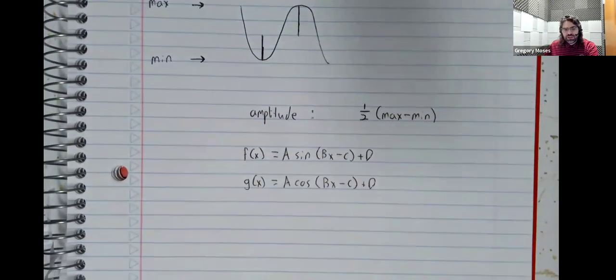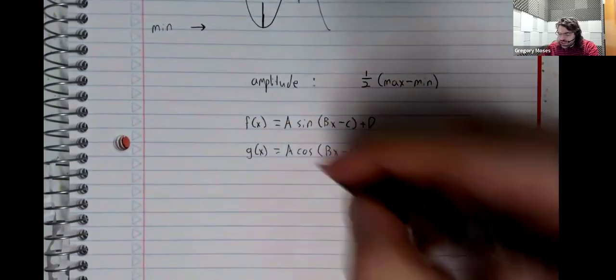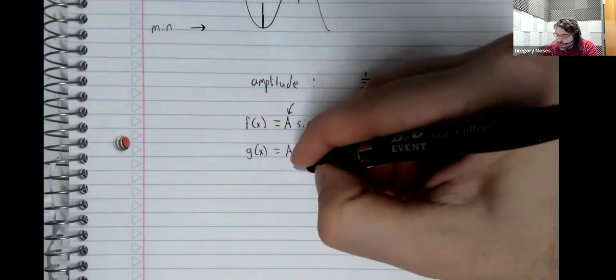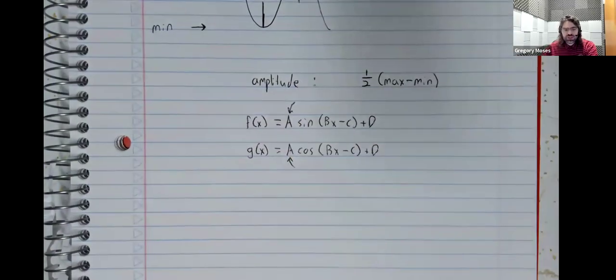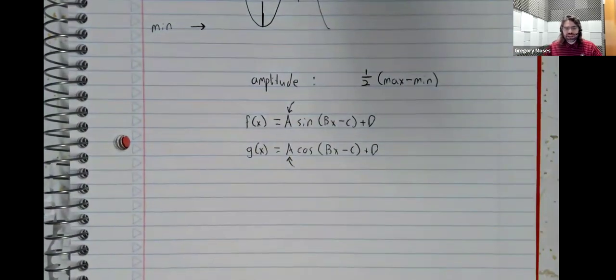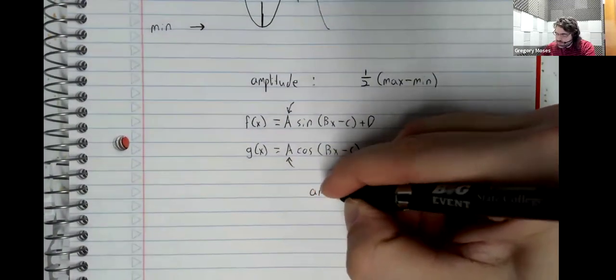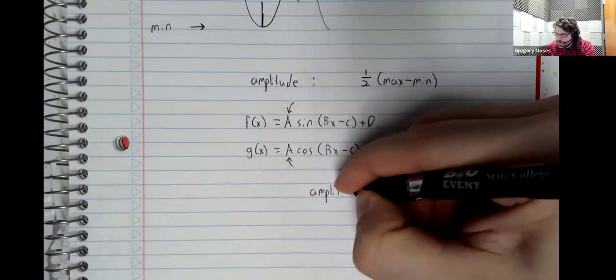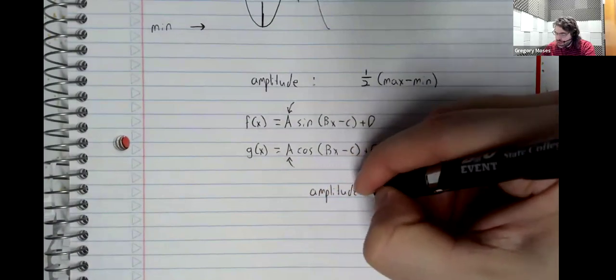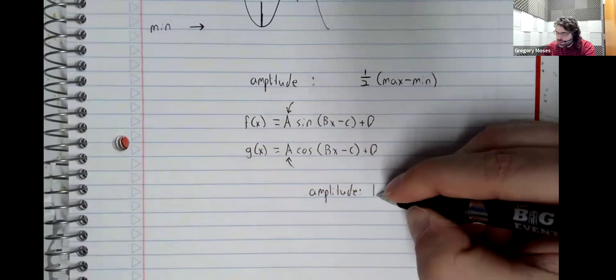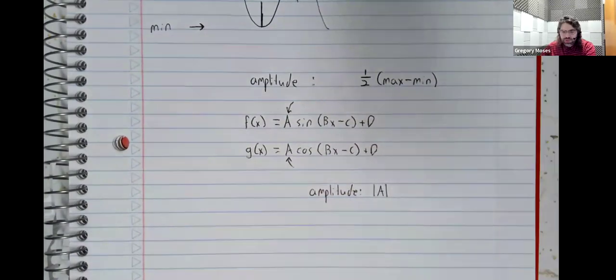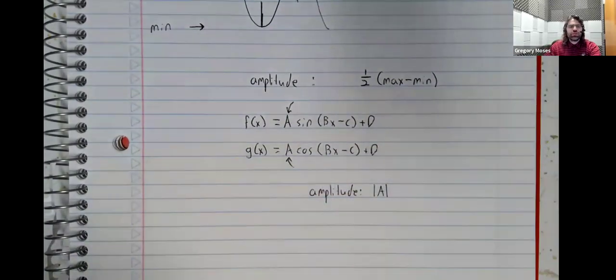In fact, the amplitude is basically just sitting there. The amplitude is controlled by that A in front of the trig function, and the amplitude is the absolute value of A.